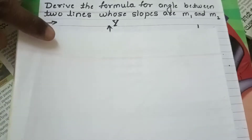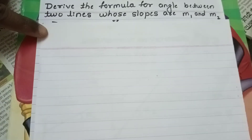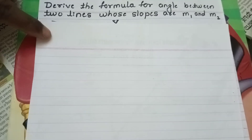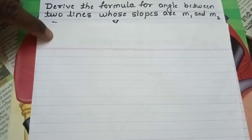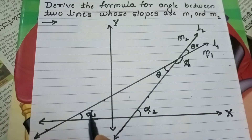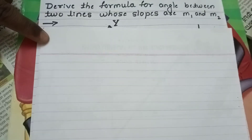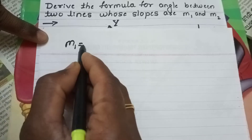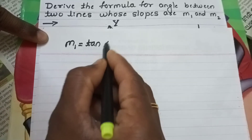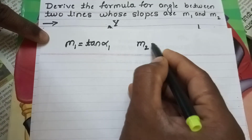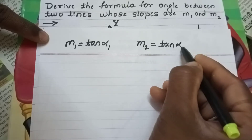Now applying the definition of slope: M is equal to tan(theta), where M is the slope and theta is the angle made by the line with the positive direction of the x-axis. So M1 is equal to tan(alpha1) for the first line, and M2 is equal to tan(alpha2) for the second line.